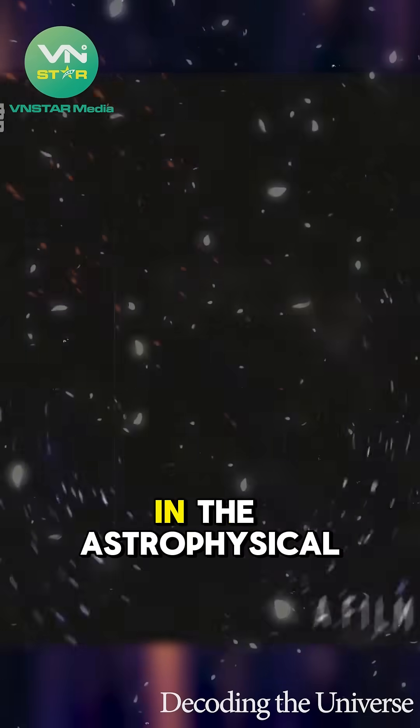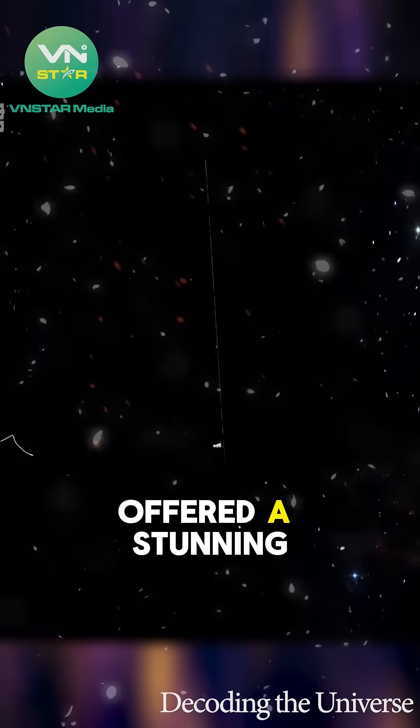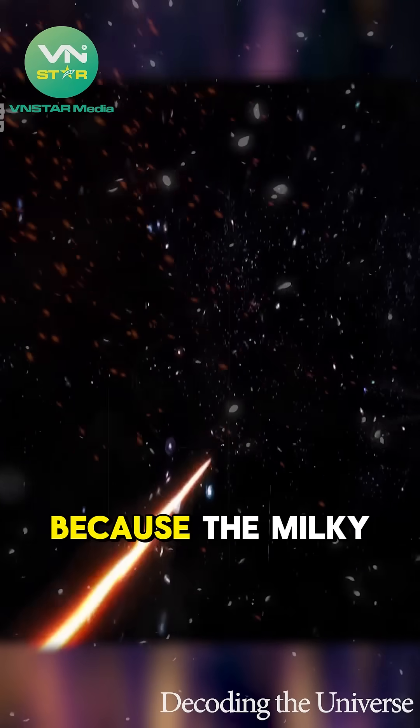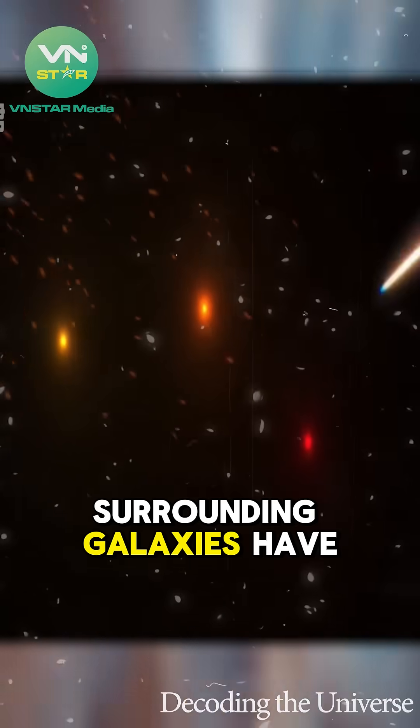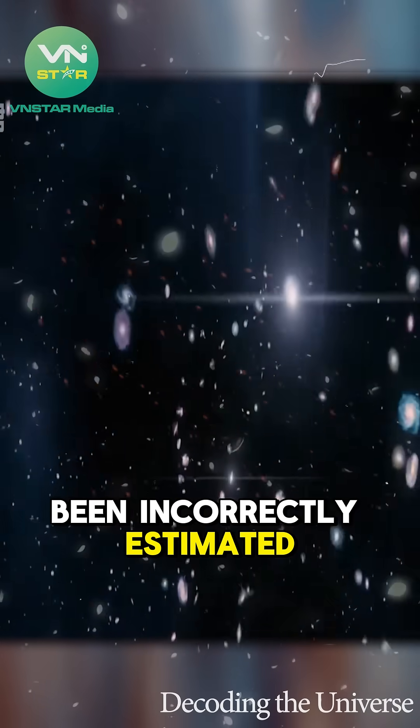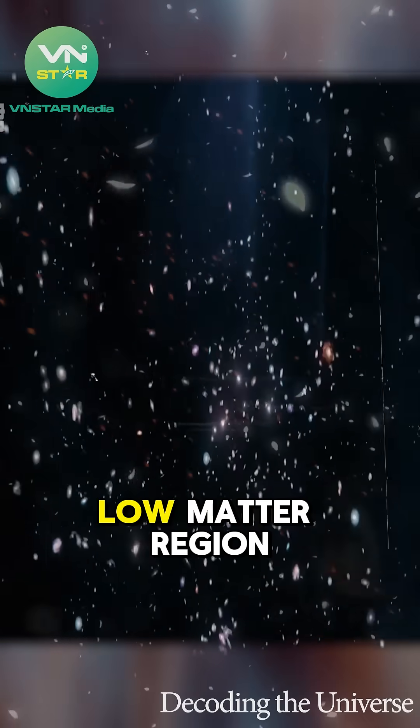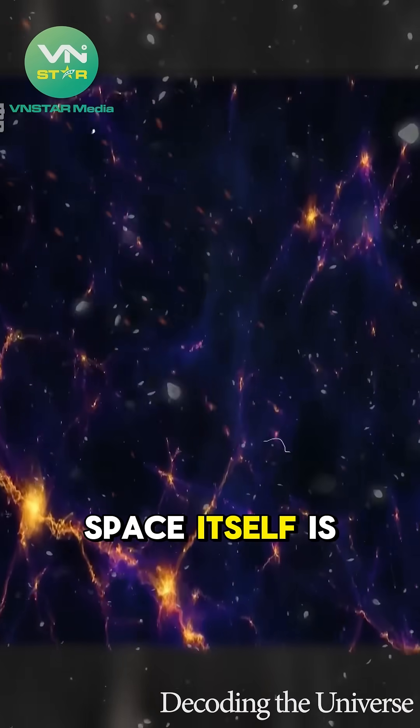A 2020 paper in the Astrophysical Journal offered a stunning explanation. Because the Milky Way lies in a low-density region, the distances to surrounding galaxies have been incorrectly estimated. In this vast, low-matter region, space itself is curved differently.